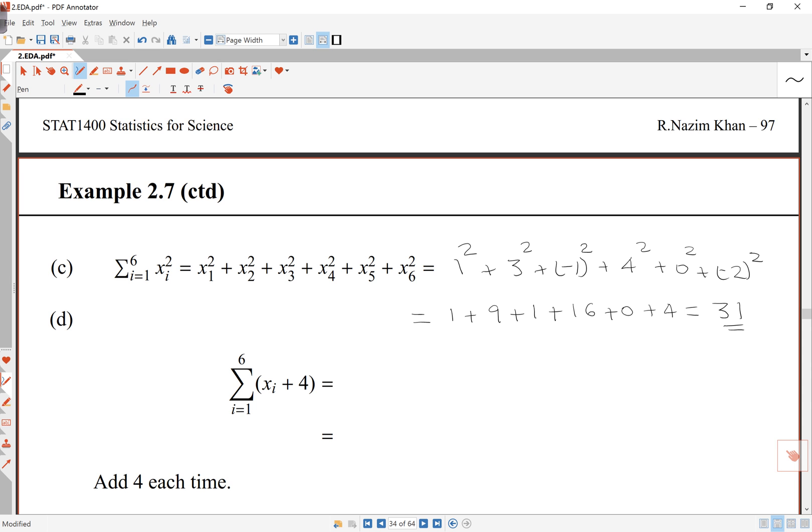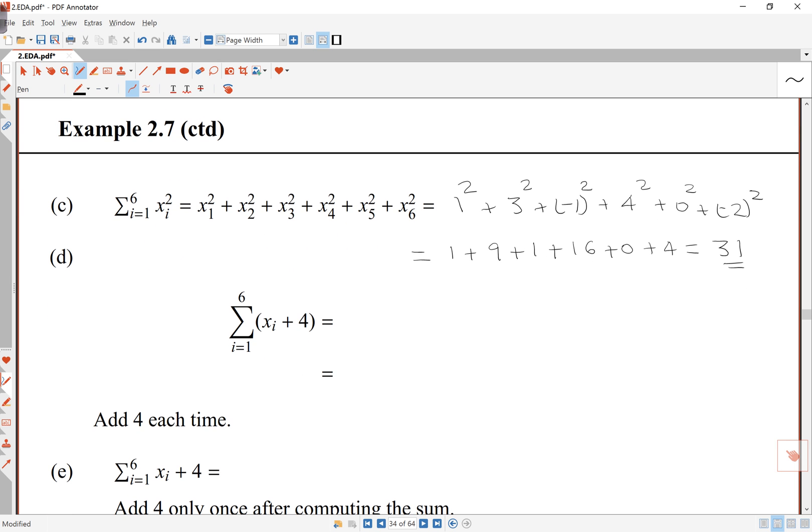In D, I've got xi plus 4, the bracket over here. It means I add 4 each time to the number before I perform the sum. So I'm going to have 1 plus 4, and then 3 plus 4, and negative 1 plus 4, 4 plus 4,